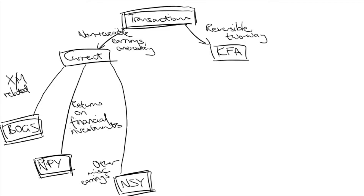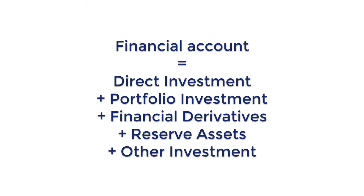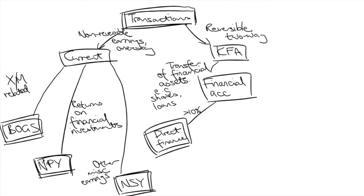Now let's talk about the financial account. These are transactions involving the movement of financial assets and liabilities — or in layman's terms, purchasing shares and loan principals. Again, these are reversible because they're expected or are able to be transferred back and forth. This account has five subcategories: direct investment, portfolio investment, financial derivatives, reserve assets, and other investment. Direct investment refers to investment that is more long-term in nature, such as to grow a business — numerically defined as the purchase of 10% or more of a company's shares.